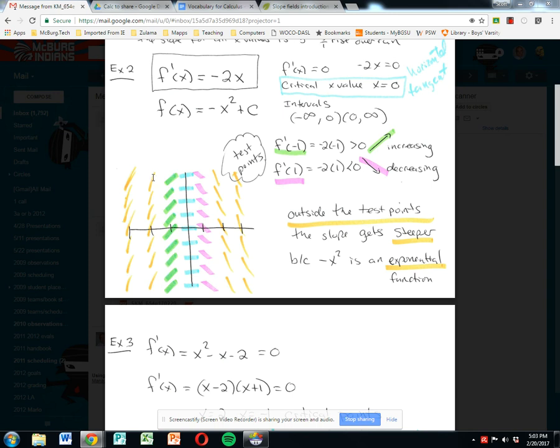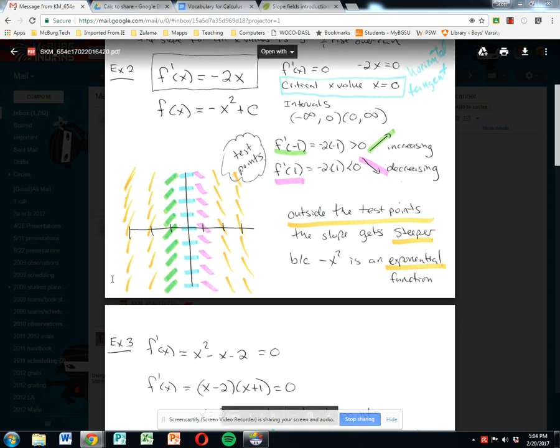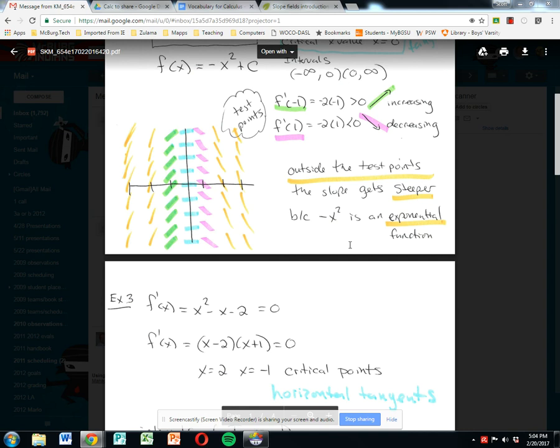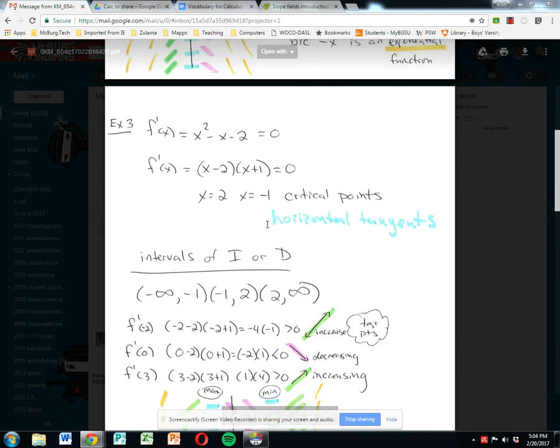The slope of these next ones out here would be -2 times -2, which is +4, or 4 over 1. These would be +6 over 1. So they get steeper and steeper as they go away from the critical point. Let's look at one more example.